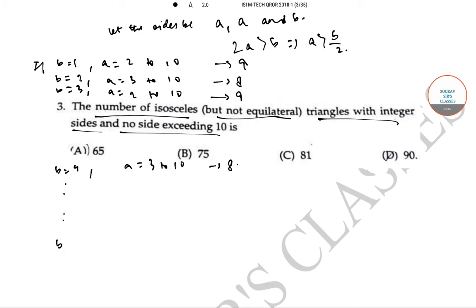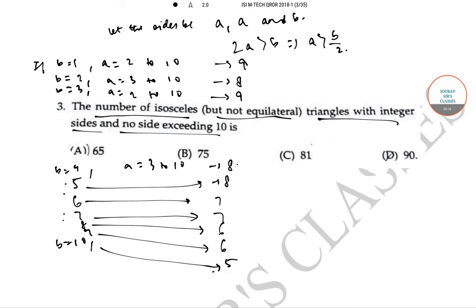Now, similarly, if we keep on calculating till B is equal to 10, we'll get more. For B is equal to 5, we'll get 8. For B is equal to 6, we'll get 7. For B is equal to 7, we'll get 7. For B is equal to 8, we'll get 6 triangles. For B is equal to 9, we'll get another 6 triangles. And for B is equal to 10, we'll get 5 triangles.